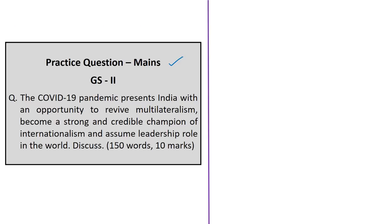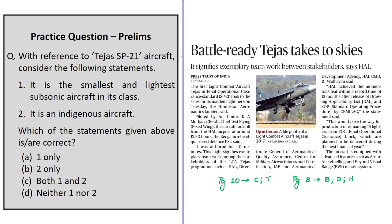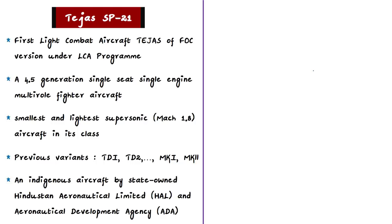The next news article talks about the maiden flight of India's first right combat aircraft's Final Operational Clearance (FOC) version, named Tejas SP-21. It is a 4.5-generation, single-seat, single-engine, multi-role fighter aircraft. It is the smallest and lightest supersonic aircraft in its class. Supersonic means it can fly faster than the speed of sound, as opposed to subsonic aircraft which fly slower than the speed of sound.